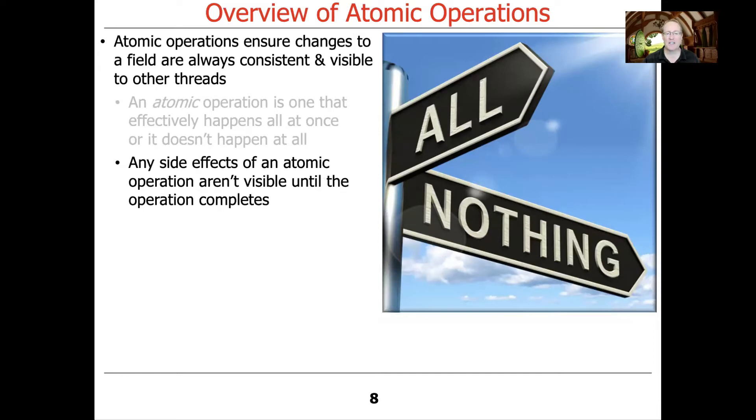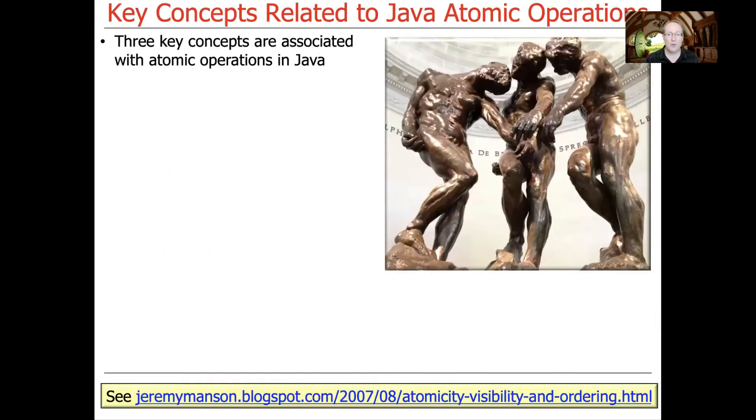Any side effects of atomic operations will not be visible to other threads until the operation completes. And that's what really makes it all or nothing. That's what makes it fundamentally atomic. So the three primary concepts that are associated with atomic operations in Java are atomicity, visibility, and ordering.